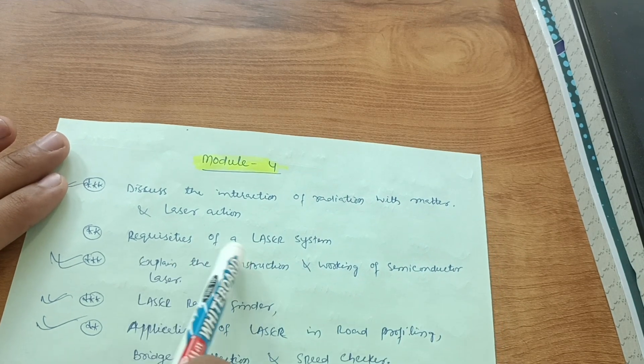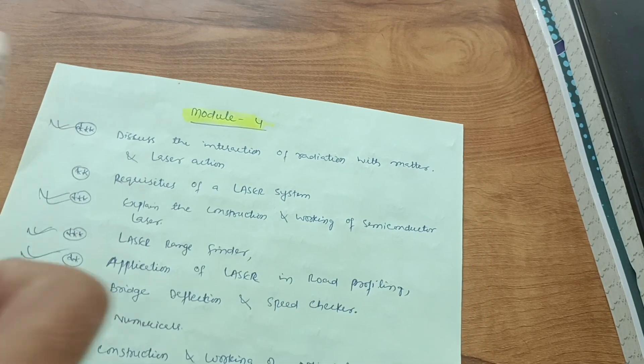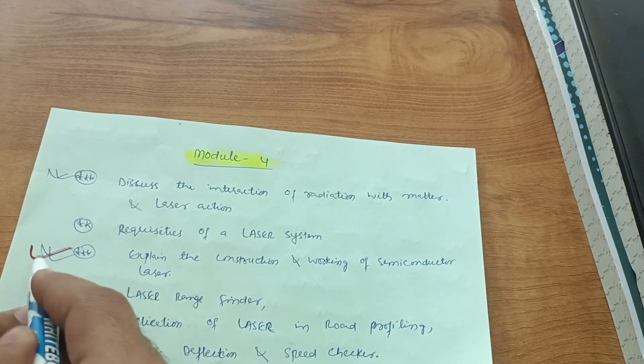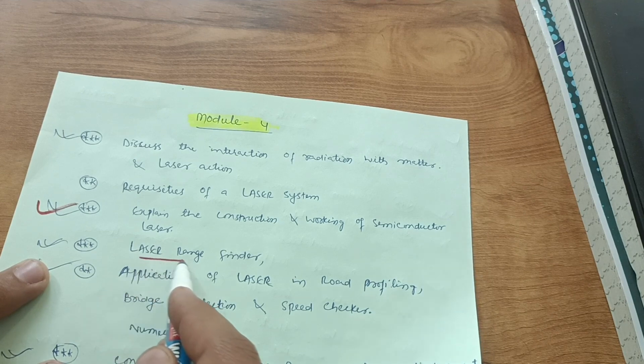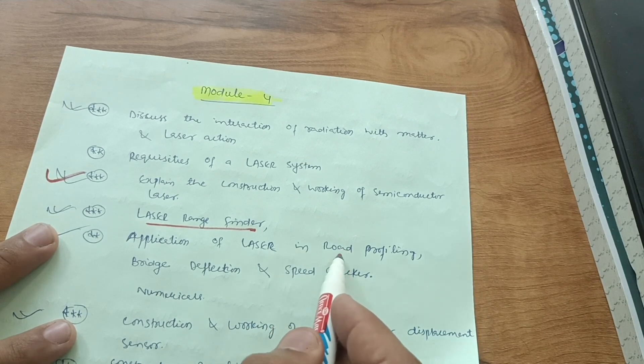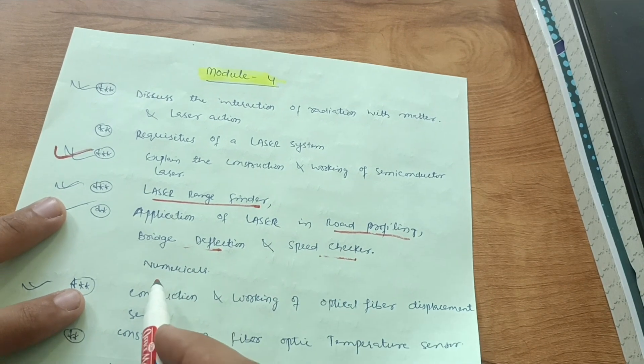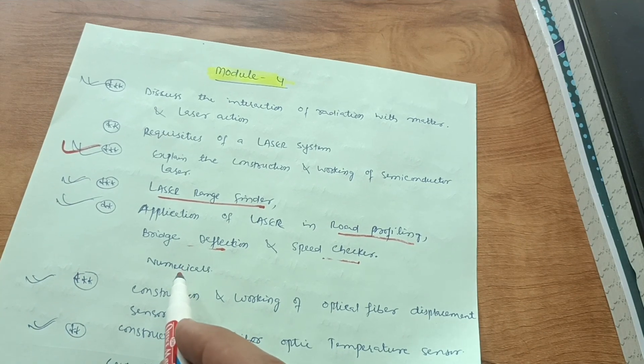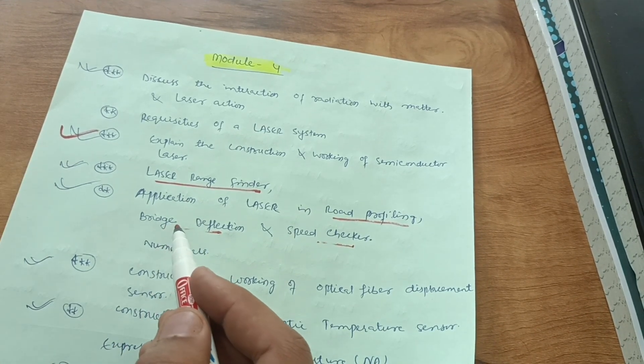Requisites of a laser system and explain the construction and working of a semiconductor laser is the most important one, my dear friends. Then laser range finder, it is also important, it is the application of laser. Then application of laser in road profiling, bridge deflection, and speed checker. Some numericals are on this particular chapter, that is laser part. Just go through simpler ones, no need to go to the depth, only put down the values given.